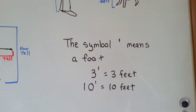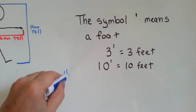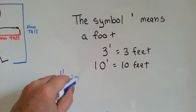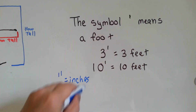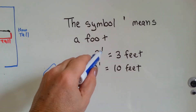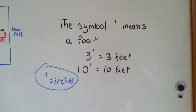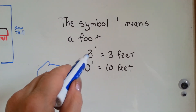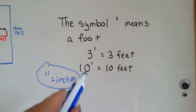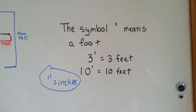I showed you before that when you have two little lines, that means inches. Well, when you have just one little line, that means foot. So a three with a little line means three feet, a ten with a little line means ten feet, and so on.